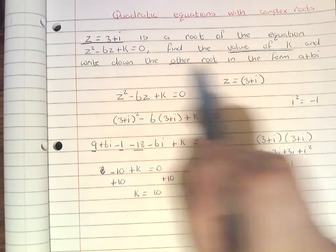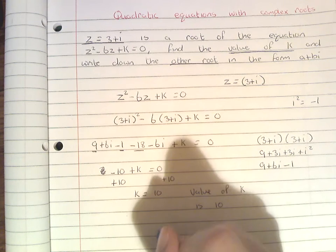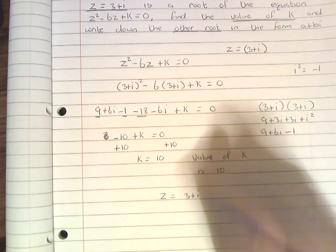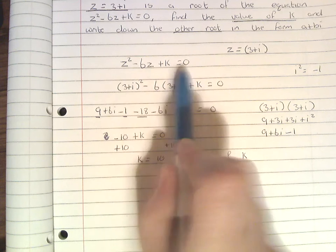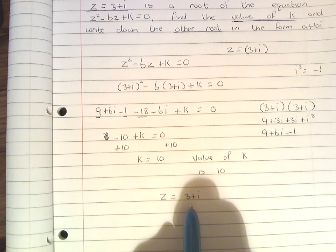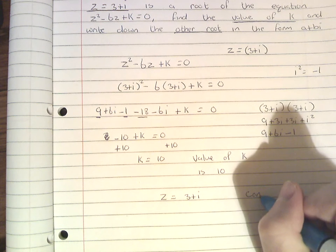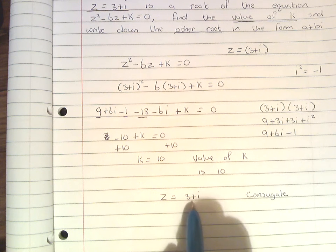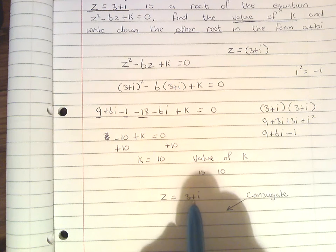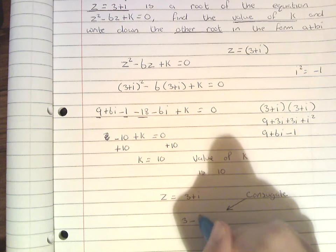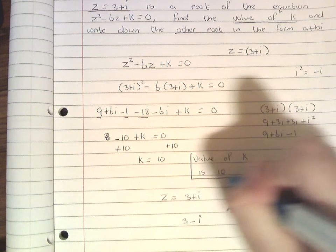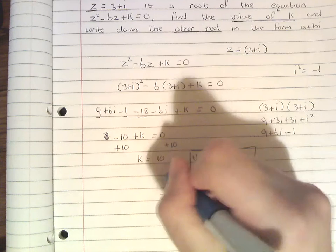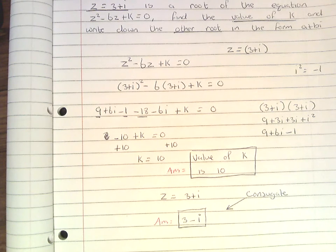So the question asks us to find the value for k — the value of k in this quadratic, which was an unknown, we've worked out is equal to 10. And then for writing down the other root in the form a plus bi: if 3 plus i is the first root, then the other root will be the conjugate of this. The conjugate — we just change the sign in front of the imaginary part — so it's going to be 3 minus i. So those are both your answers.